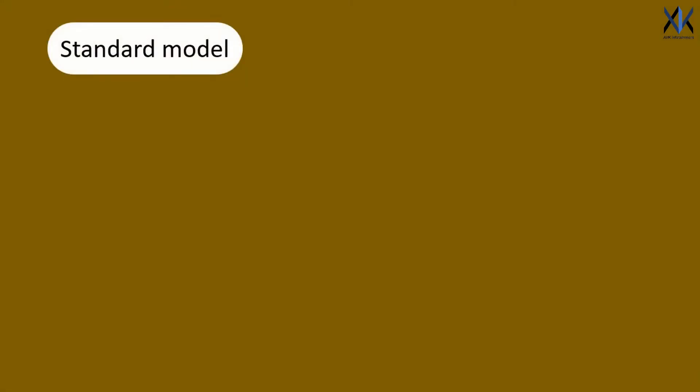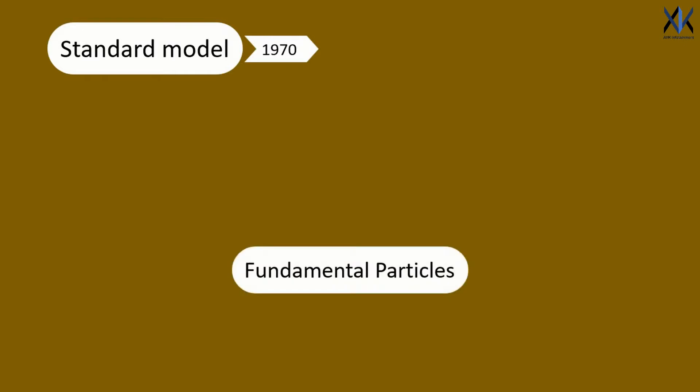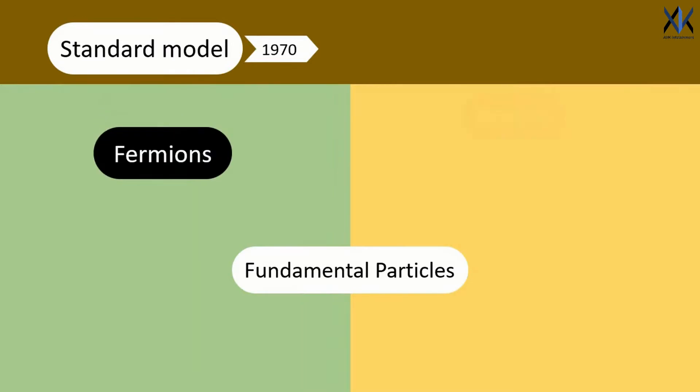The standard model is the name given in the 1970s to a theory of fundamental particles and how they interact. This model divides the elementary particles into two major categories, fermions and bosons, based on the spin.